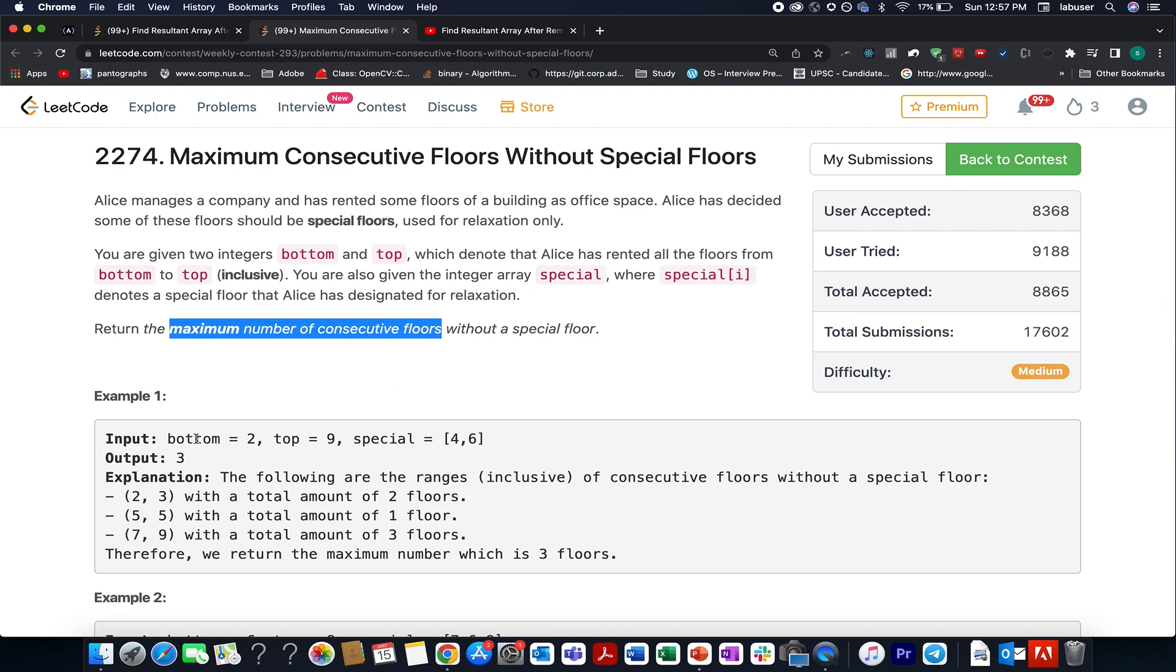For example, here the bottom index is 2, top index is 9, and special floors are at 4 and 6. So the first contender for the answer becomes 2, 3. The size of this range is 2. Next contender becomes 5, followed by the third contender which is 7, 8, and 9. The size of the last contender is the maximum one. Therefore it becomes the answer.